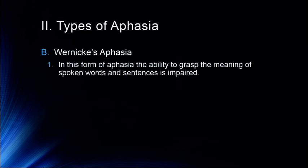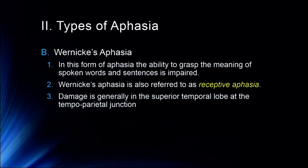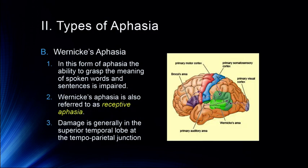In Wernicke's aphasia, the ability to grasp the meaning of spoken words and sentences is impaired. Wernicke's aphasia is also referred to as receptive aphasia, and it can also cause disruption in reading and visual comprehension. Damage is generally in the superior temporal lobe at the temporal-parietal junction. Wernicke's area is in the anterior superior temporal lobe right at the conjunction with the parietal lobe, and sometimes it can be thought to contain parts of the parietal lobe. This results in an inability to understand spoken language and often written language, which we refer to as alexia.